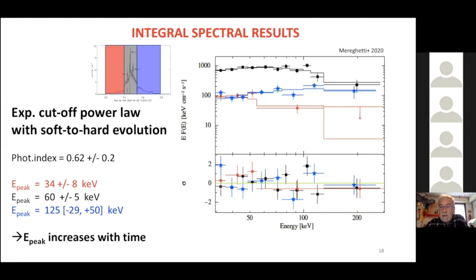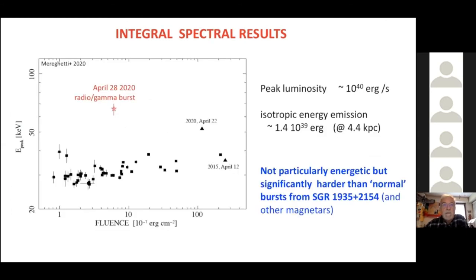What about the energetic of these events? From the point of view of the X-ray energy, it was not particularly bright. You see in this plot a sample of bursts from this magnetar, in which we plot the fluence and the peak energy. So you see that the fluence of this event was not particularly bright compared to other events from the same source. On the other hand, its spectrum was significantly harder than typical values observed before.